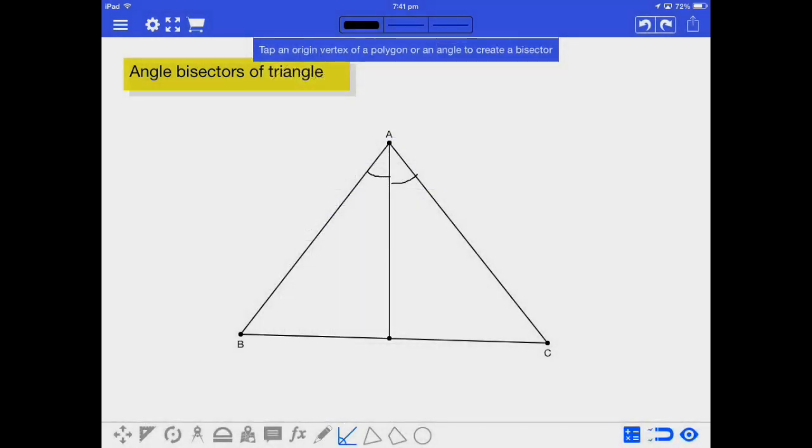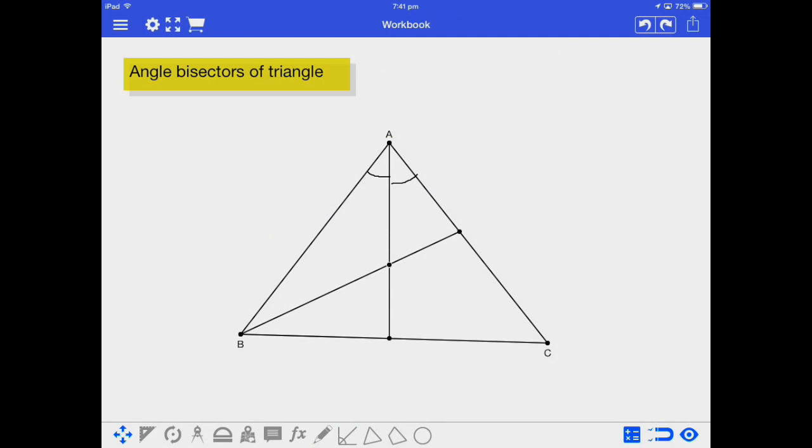We can continue to draw the angle bisectors for angle B and angle C.